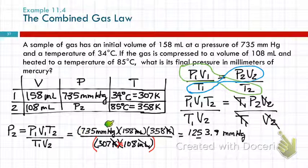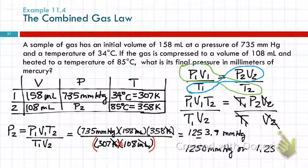The other way you can do this is 735 times 158 times 358, divided by 307, divided by 108. Calculator mistakes are very common here. So, what's the final pressure in millimeters of mercury? Well, it's 1,250 millimeters of mercury, or 1.25 times 10 to the third. Any questions?